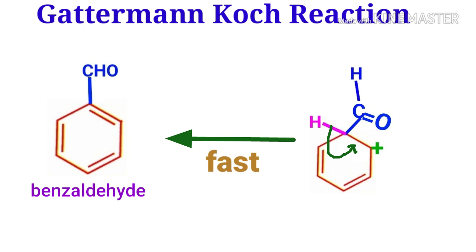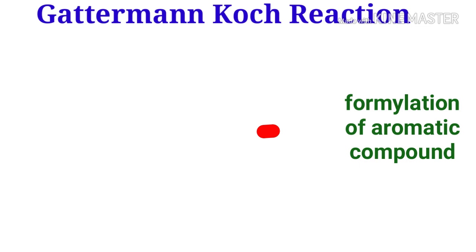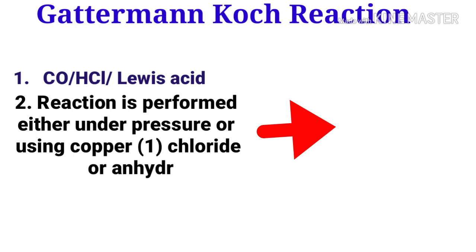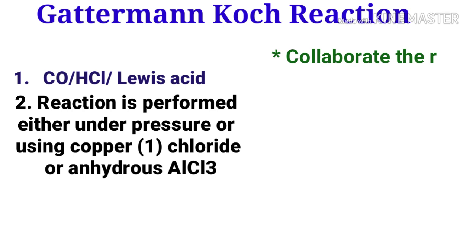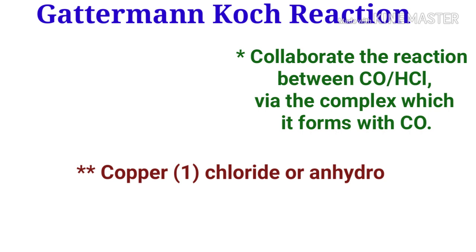What is the role of cuprous chloride (Cu2Cl2)? The formylation of an aromatic compound can be carried out by treatment with carbon monoxide and hydrogen chloride in the presence of a Lewis acid. The reaction is performed either under pressure or using copper chloride or anhydrous aluminum chloride, whose role may be to facilitate the reaction between carbon monoxide and hydrogen chloride via the complex it forms with carbon monoxide. So copper chloride or anhydrous aluminum chloride acts as a promoter to speed up the reaction.